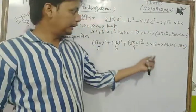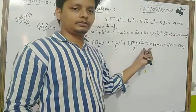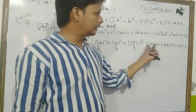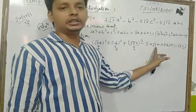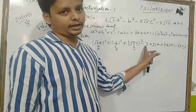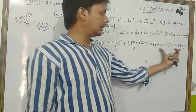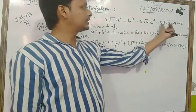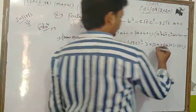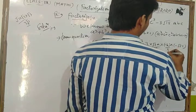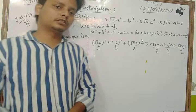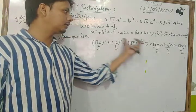For the -3abc term: 3 × (√3a) × (-b) × (-√5c) = 3√15 abc × (+1) but with signs: minus minus gives plus, so we get -3√15 abc, matching the question. This confirms a = √3a, b = -b, c = -√5c.